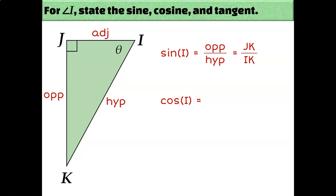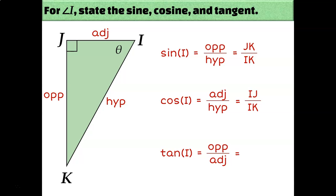For cosine of angle I: cosine is CAH, so adjacent over hypotenuse. The adjacent side is IJ, and the hypotenuse is IK, so the cosine of angle I is IJ over IK. For tangent: TOA, so opposite over adjacent. Opposite is JK, and adjacent is IJ, so the tangent of angle I is JK over IJ.